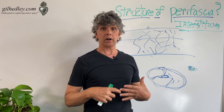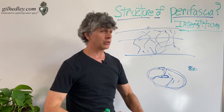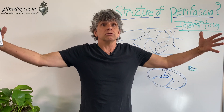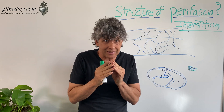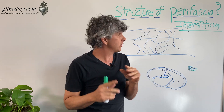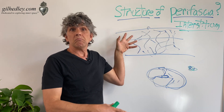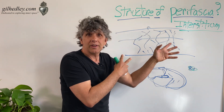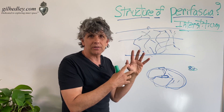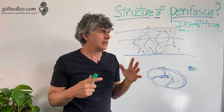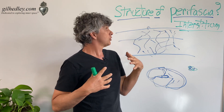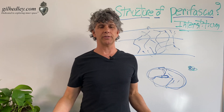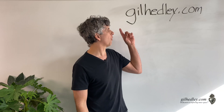What we have in our human form is a continuity from the gross structures to the most tiny structures — a loose, membranous, super-hydrated, translucent movement system. If you'd like to learn more, visit me at gilhedley.com — there's a ton of stuff there. Enjoy.